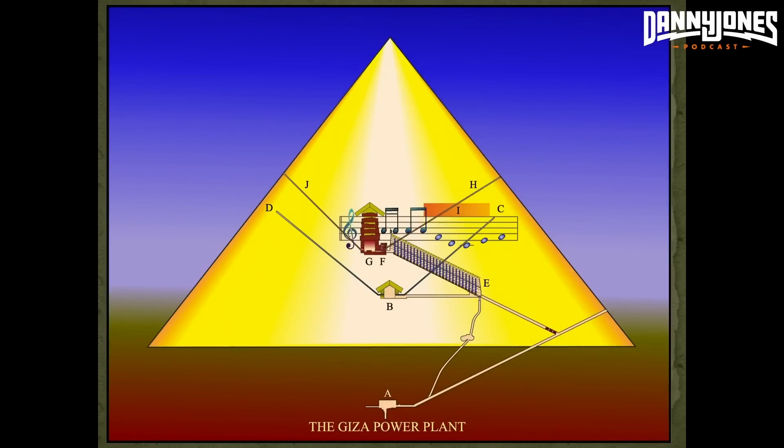So there are two shafts going out of the King's Chamber, which is in the upper middle of the pyramid — H and J on this diagram. These are what we were just looking at: these waveguides, allegedly. One of them brings something in, and then it goes through the King's Chamber, and then the other one shoots it out. Something happens in between inside that King's Chamber — G.